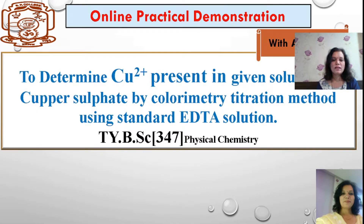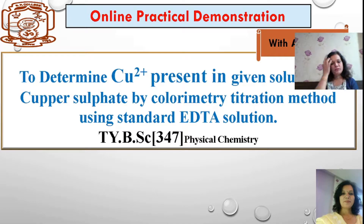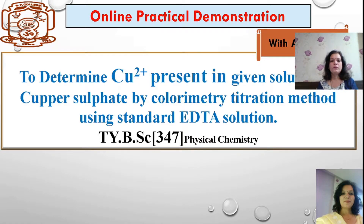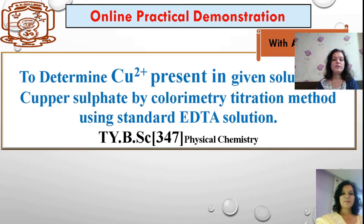Welcome back to Dr. Sucheta's interactive class. Today we will see an online practical demonstration with animation to determine copper present in a given solution of copper sulphate by colorimetric method, where we are going to perform a titration from the given solution of copper with standard EDTA solution.